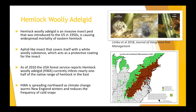Unfortunately, the hemlock woolly adelgid is spreading northward as a result of climate change warming more of these New England winters and reducing the frequency of these much-needed cold snaps, as cold winters are one of the most important deterrents to the spread of the hemlock woolly adelgid.